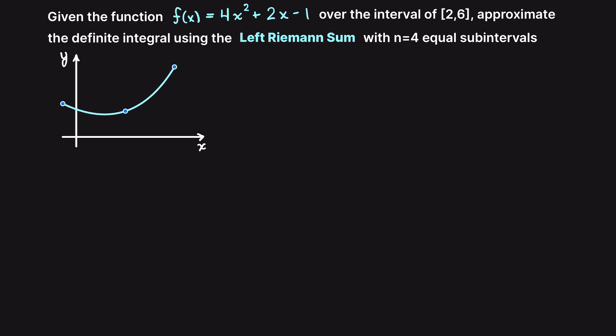The first thing I am going to do here is draw out our function so that we can visually see the steps that we are going to be applying. The polynomial function will look something like this, with our lower integration bound 2 and our upper integration bound 6, and we are trying to approximate the area under the curve within these bounds.